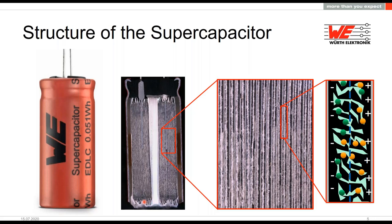The Helmholtz layer involves the electrostatic storage of electrical energy by separation of charge at an anode. The double layer refers to two parallel layers of charge surrounding one object, as shown in the picture. Every charge on one side of the electrode is balanced by a mirror charge on the other side.